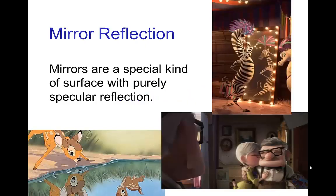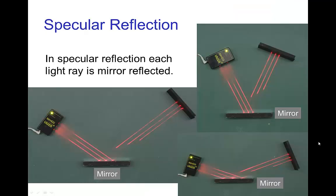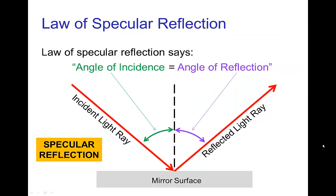Mirrors are a special kind of surface that has a purely specular reflection, so no diffuse reflection. We can see that demonstrated here where the laser beams are striking the surface and the reflection is at a single angle and direction which changes depending on the angle that the incoming light rays strike the mirror. This is given by the law of specular reflection which says that the angle of incidence equals the angle of reflection.